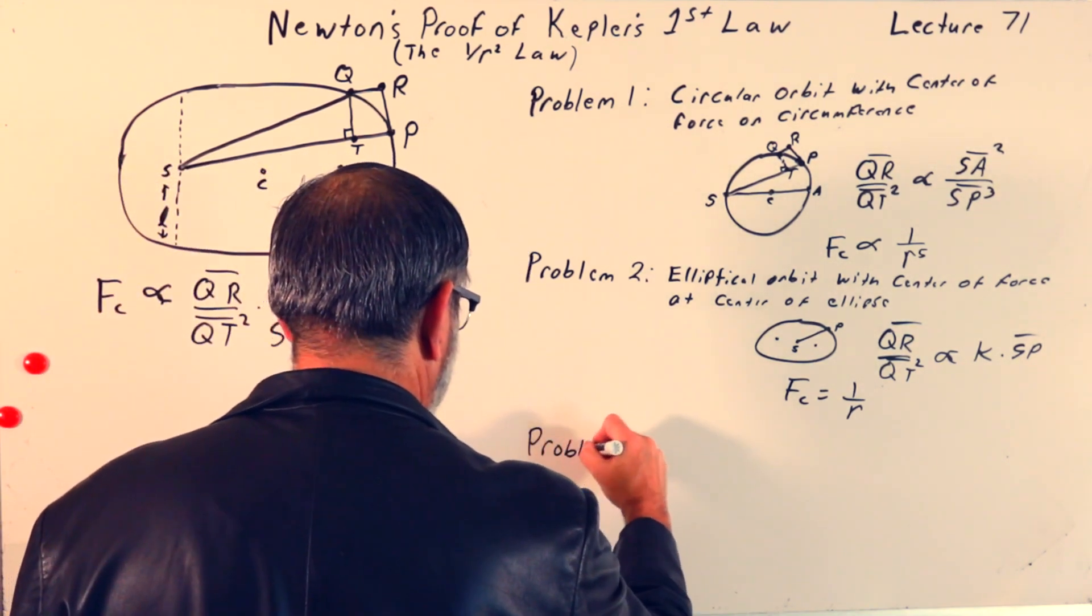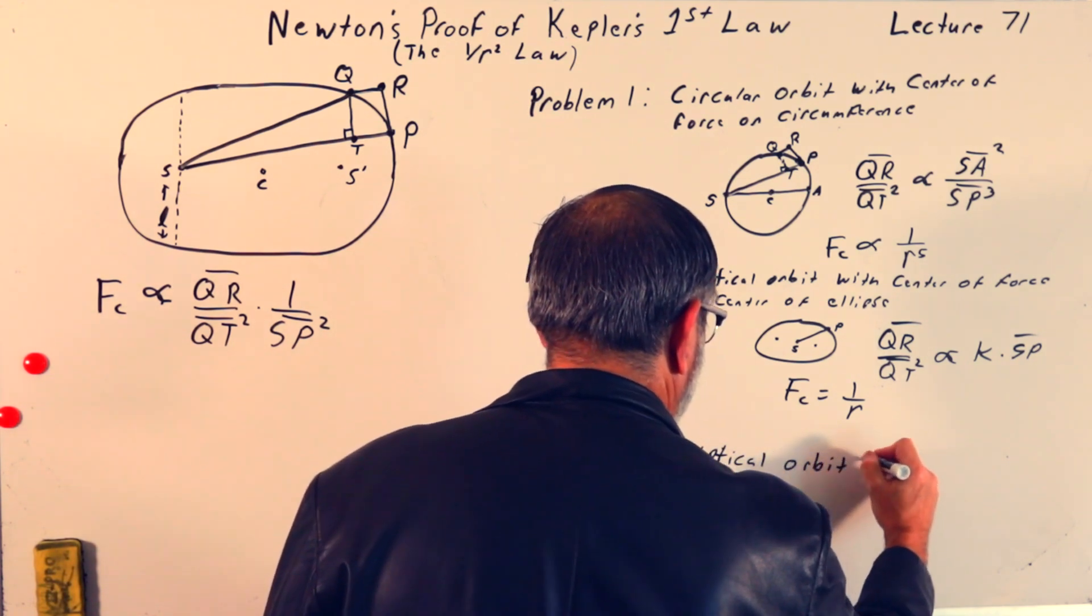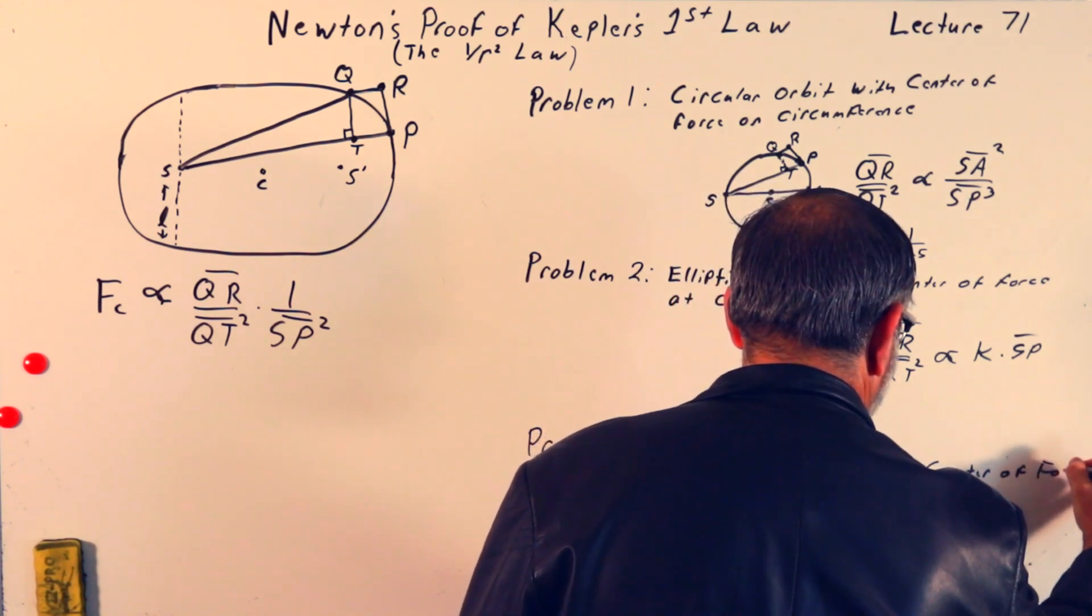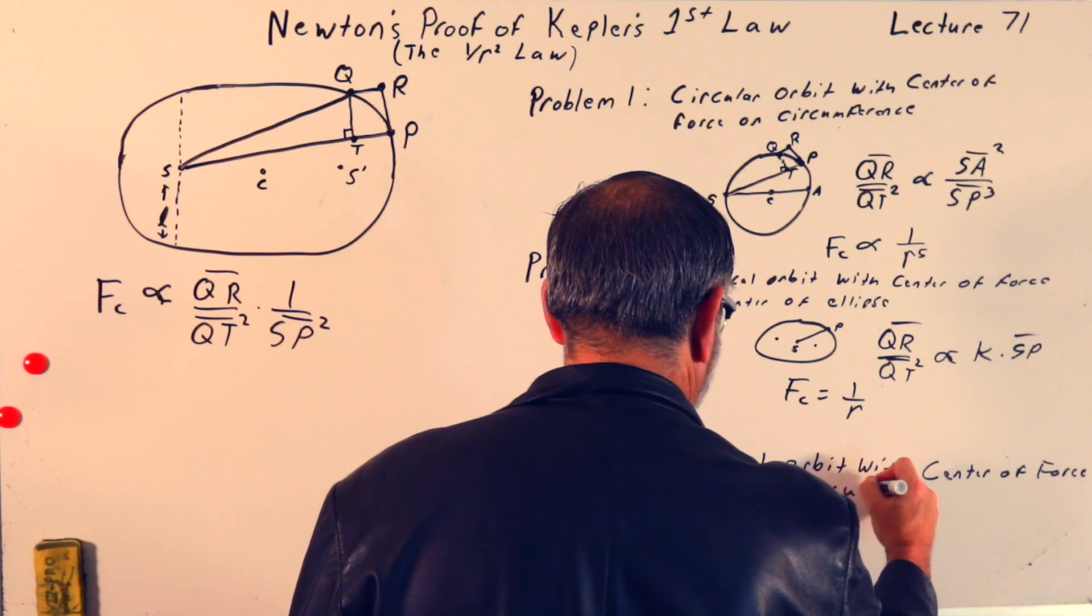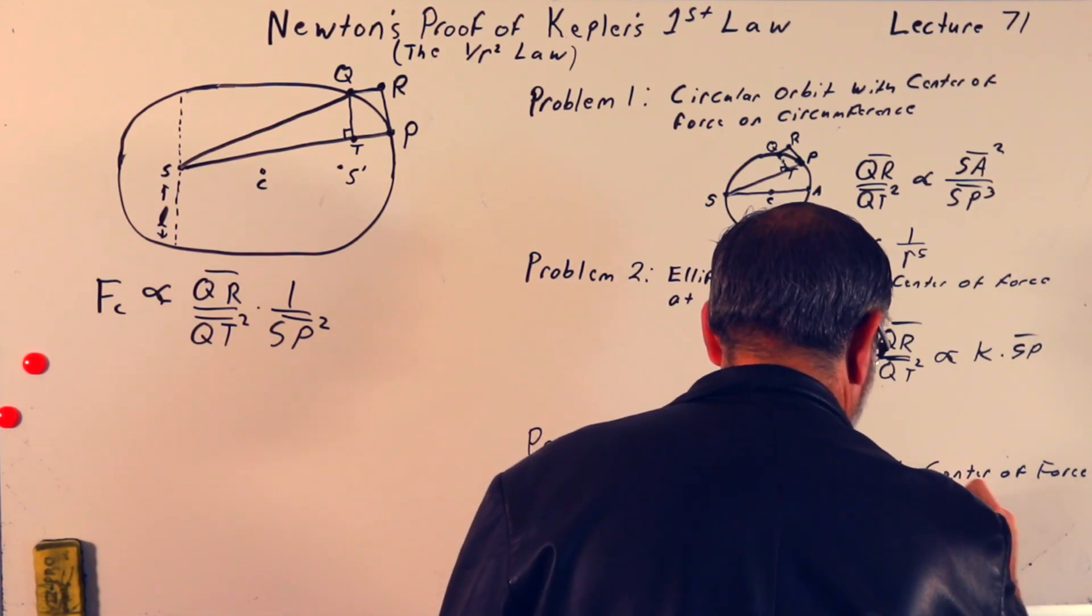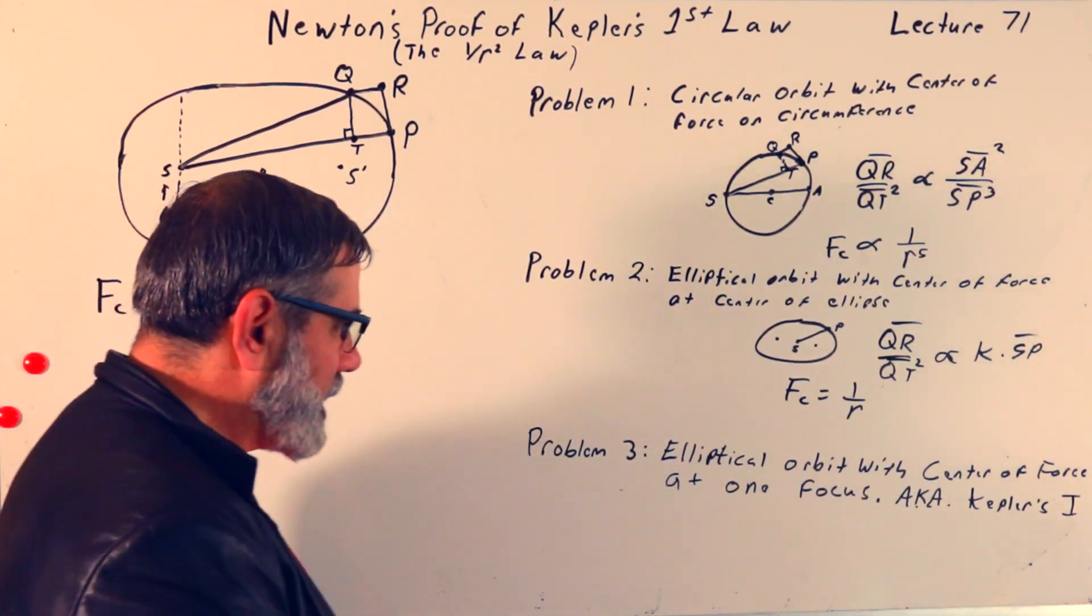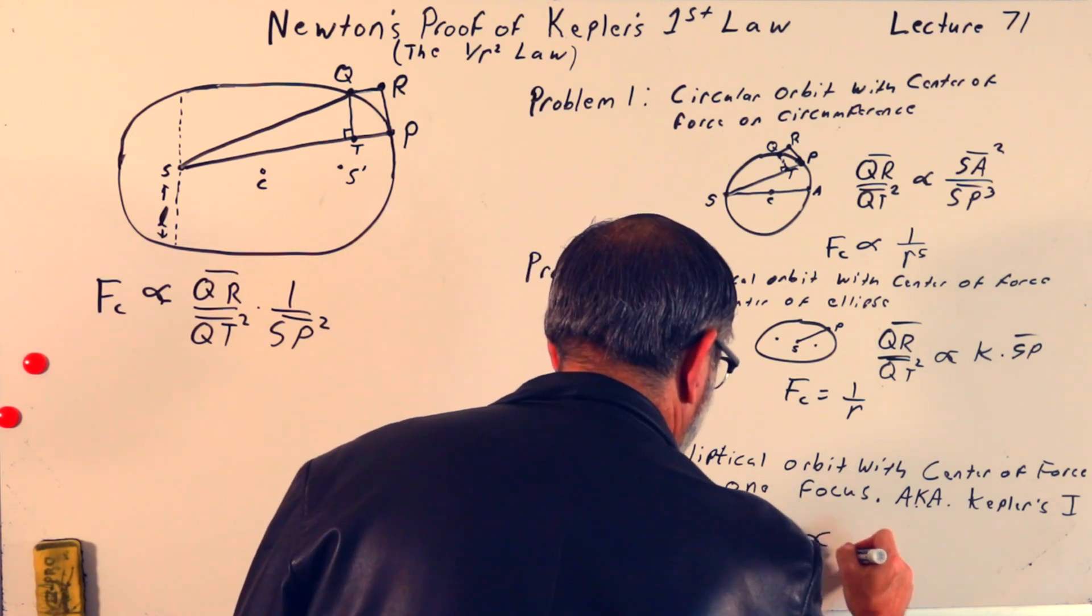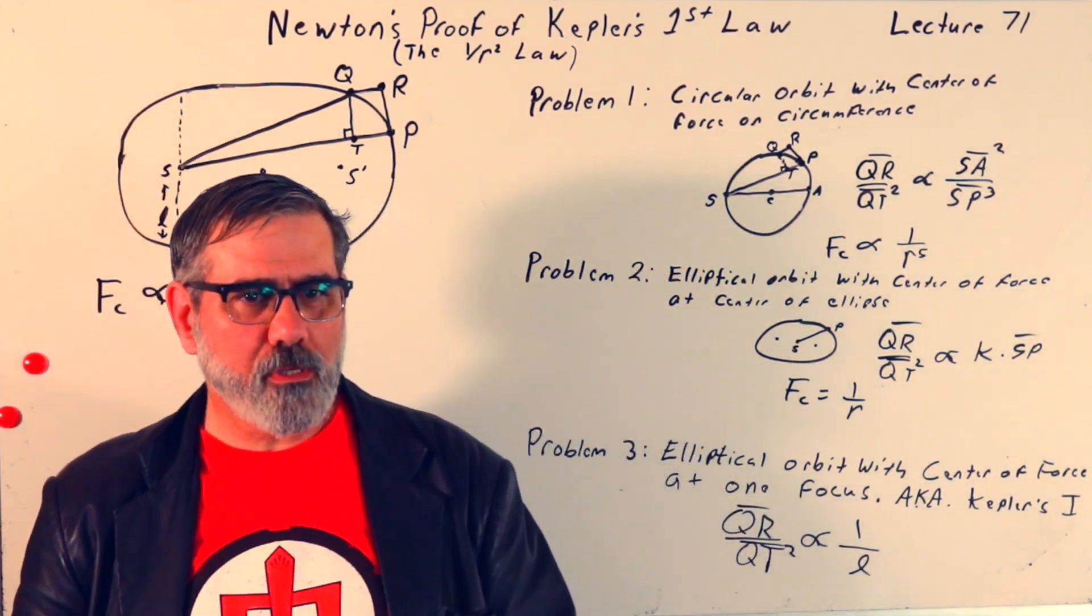And finally, problem 3. Elliptical orbit with center of force at one focus. That's the Kepler. This is, you know, the Kepler, a.k.a. Kepler first law. So, in that case, he finds that QR over QT squared is proportional to 1 over the latus rectum, this quantity over here. The latus rectum, though, is characteristic of the elliptical orbit itself.